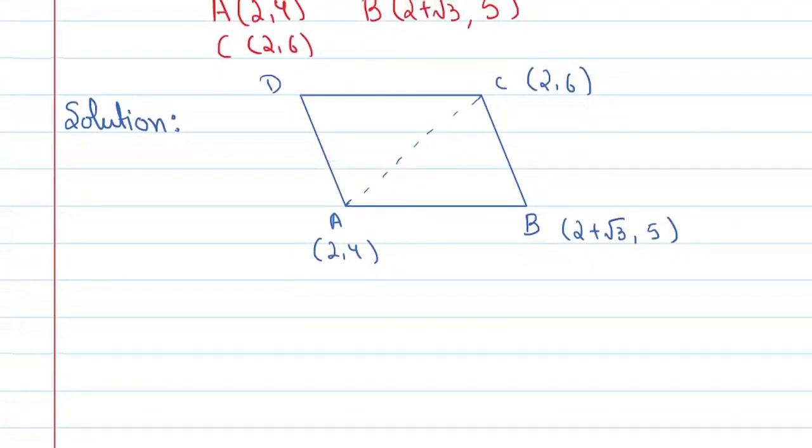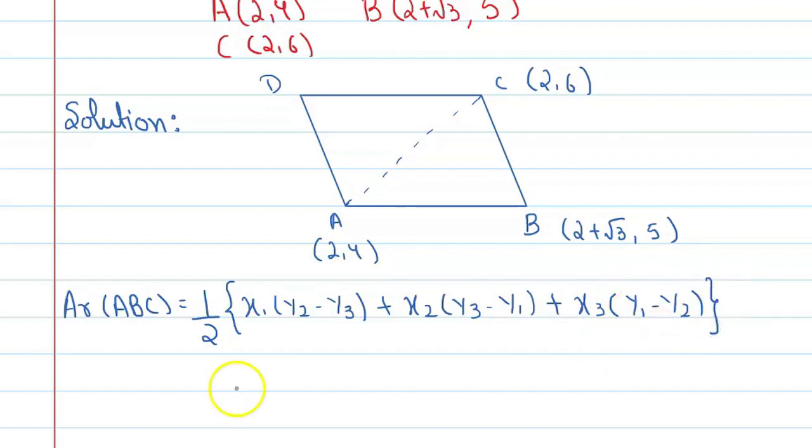Here the area of triangle ABC is equal to half [x1(y2 - y3) + x2(y3 - y1) + x3(y1 - y2)]. Now what are these values? Here x1 is equal to 2, y1 is equal to 4, x2 is equal to 2 plus root 3, y2 is equal to 5, x3 is equal to 2, and y3 is equal to 6.